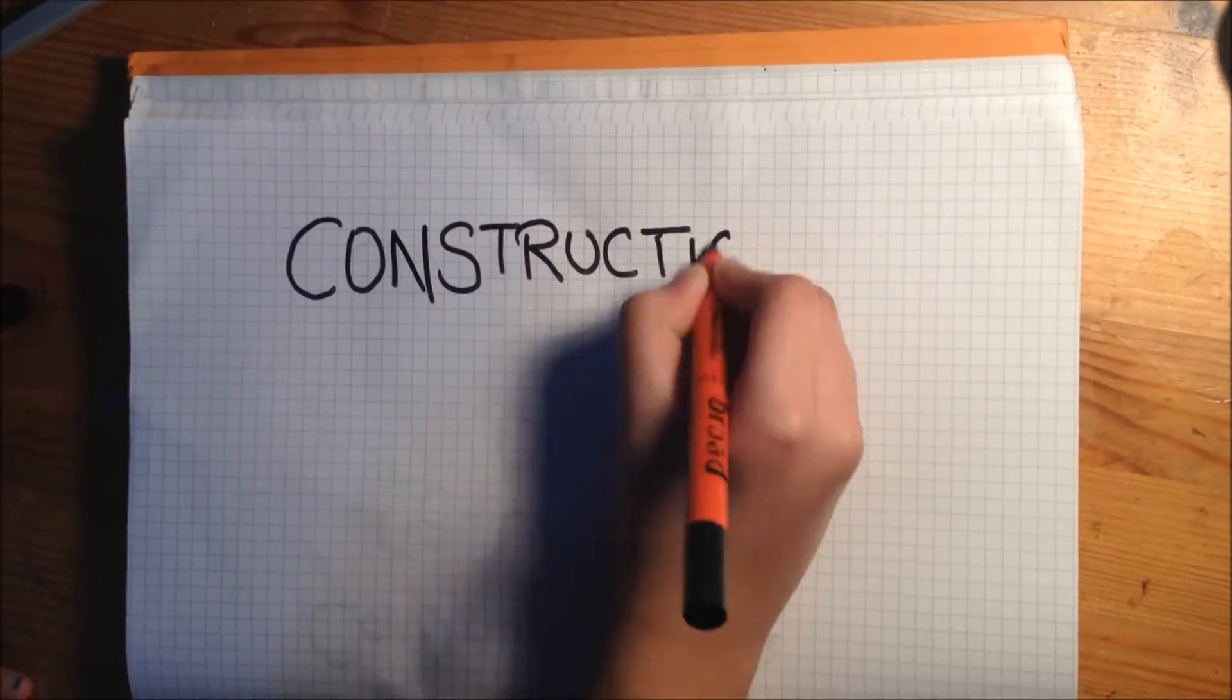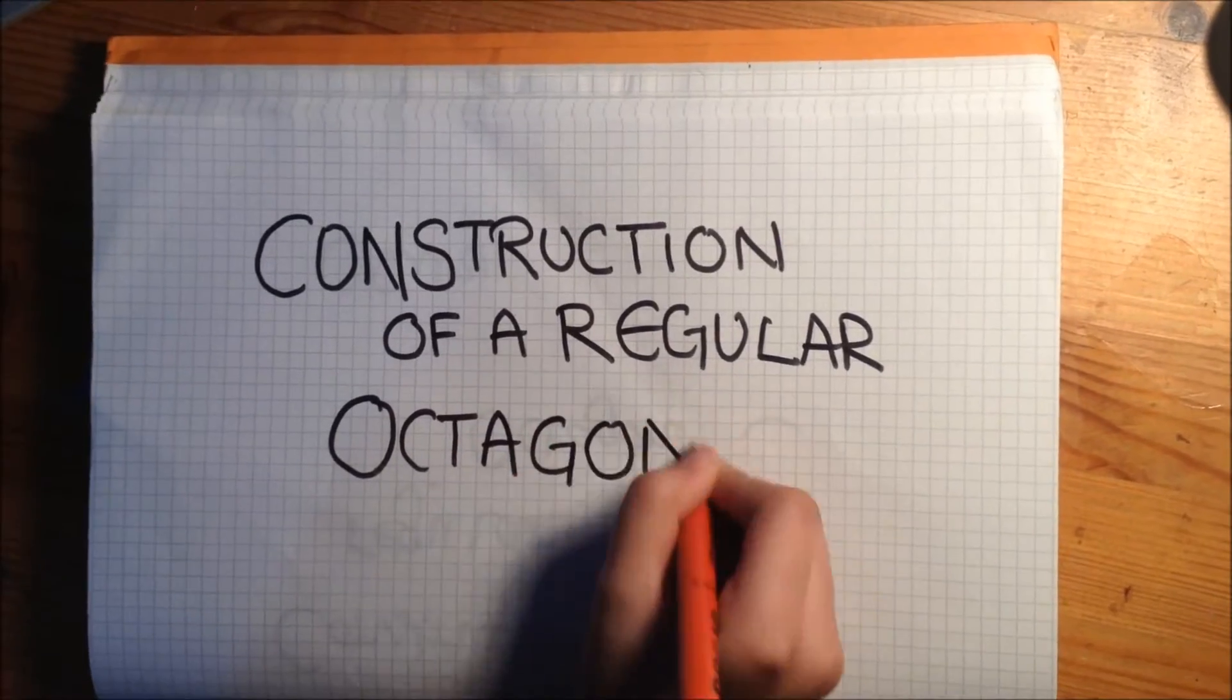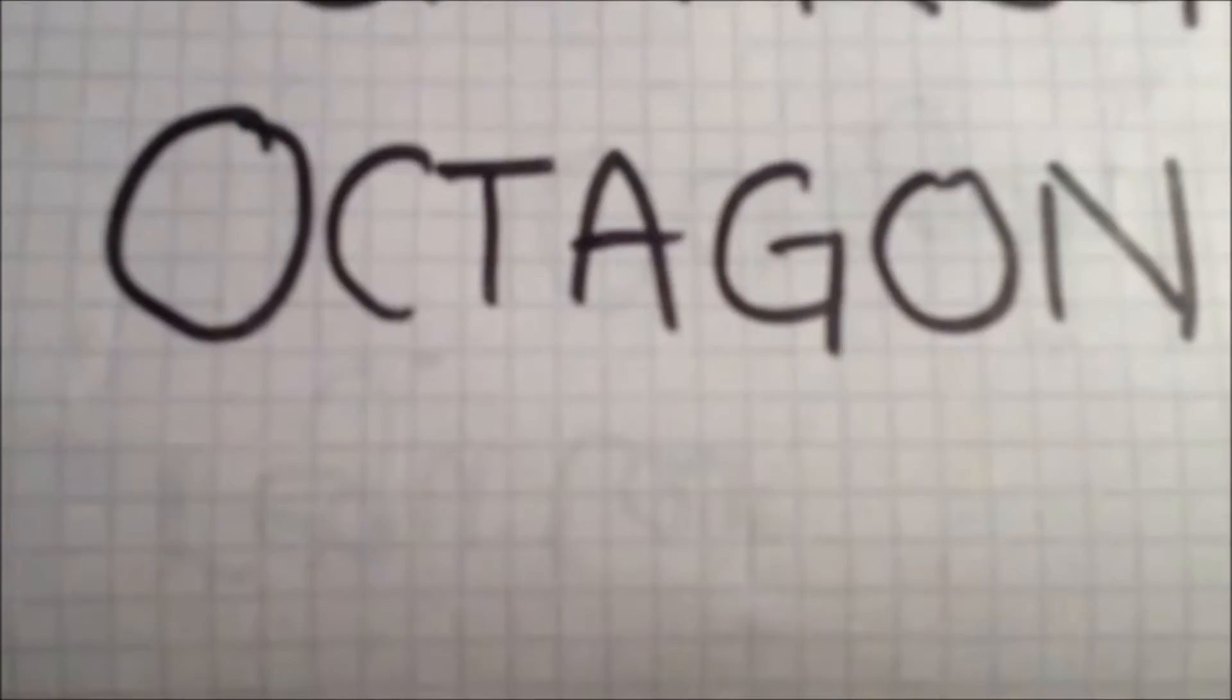In this tutorial, I'll be showing you how to construct a regular octagon, so that's a shape with eight sides, without using a protractor.